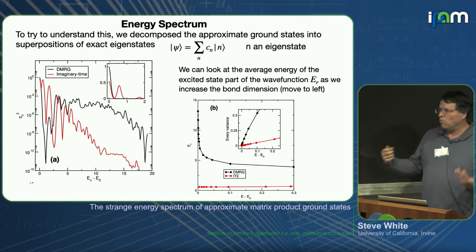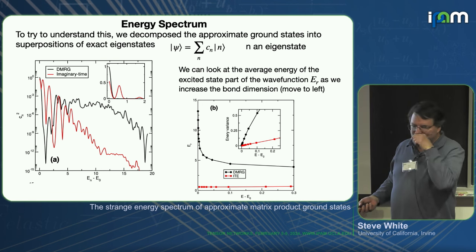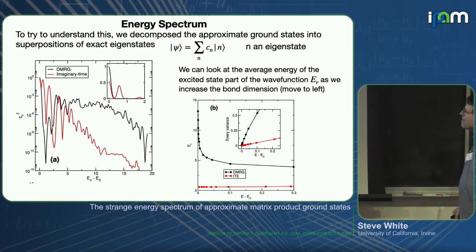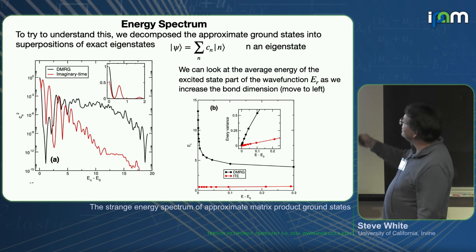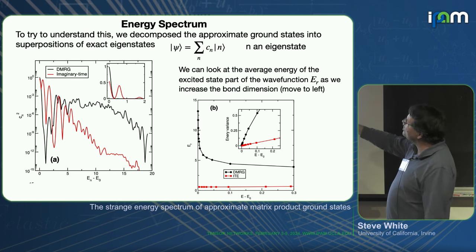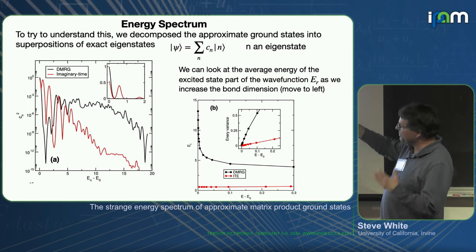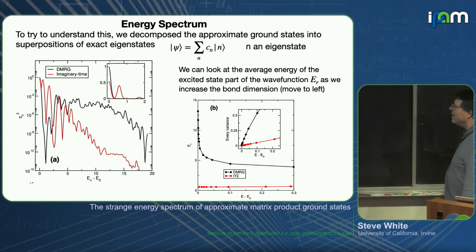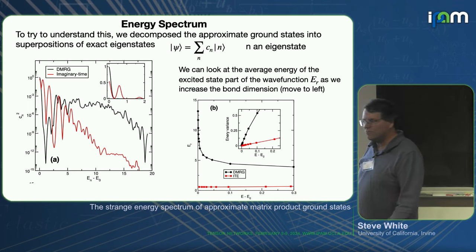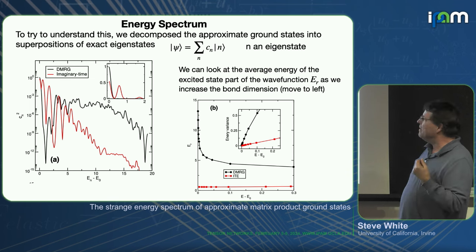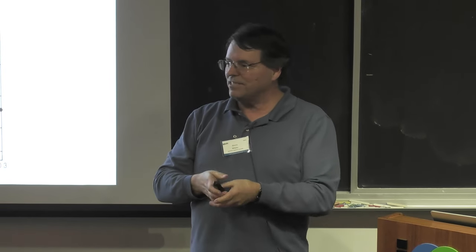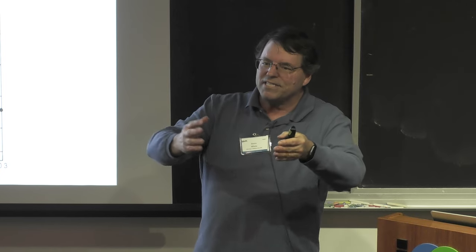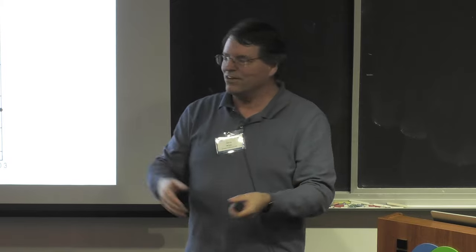To understand this, on a small system, we decomposed the approximate ground states into superpositions of exact eigenstates on four by four systems. We look at the energy spectrum of a DMRG wave function. Our expectation before this — mostly we didn't think too hard about it — all of our experience is based on imaginary time propagation and Monte Carlo. We tend to think, oh yeah, your DMRG state isn't converged, it must have a few low-lying states mixed in. But that's not true at all.